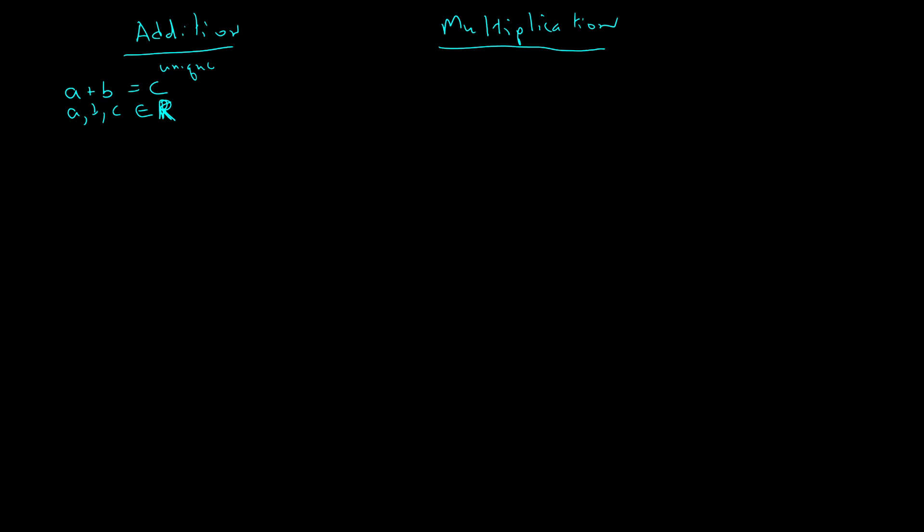And so addition being closed means if I add any two real numbers, I get a unique real number. And it also means that A plus B will always equal C. And so this is called closure. And we get the same thing on closure for multiplication.